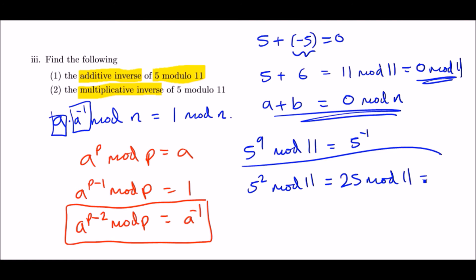That means 5 to the power 4, if you square both sides, will give you 9. Then 5 to the power 8 will give you 81.